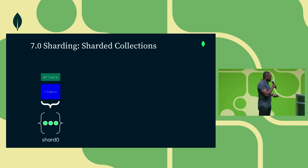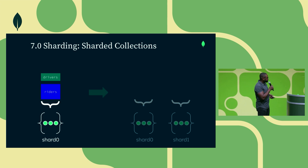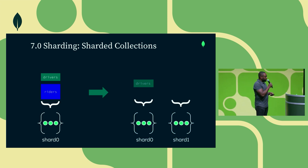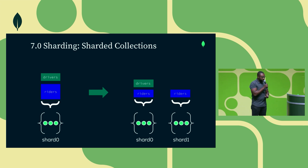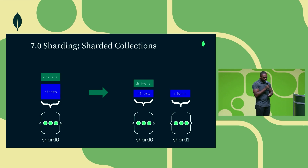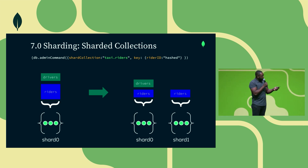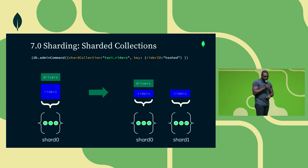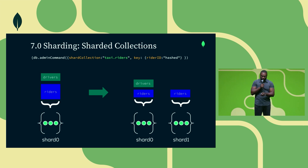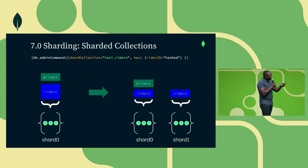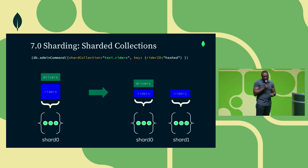You can have multiple collections on a database. For example, with a riders collection and a drivers collection, you shard the riders collection using a hashed rider ID so inserts go evenly across shards. Your cluster then has shard 0 with half the riders and the drivers collection, and shard 1 with the other half of riders. When you add shard 2, MongoDB automatically redistributes the riders collection one-third on each shard, while the drivers collection stays on shard 0 unless you shard it. You still need to pass the shard key through your application.